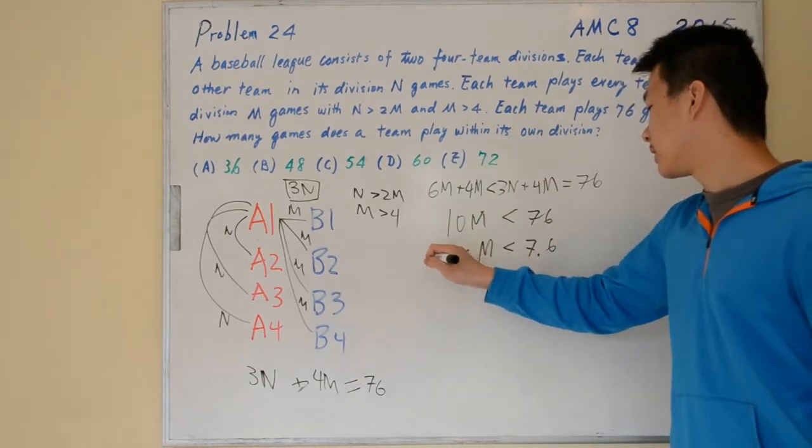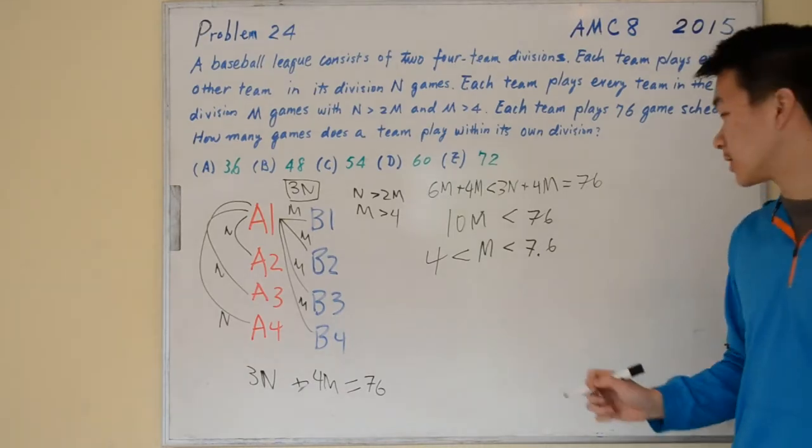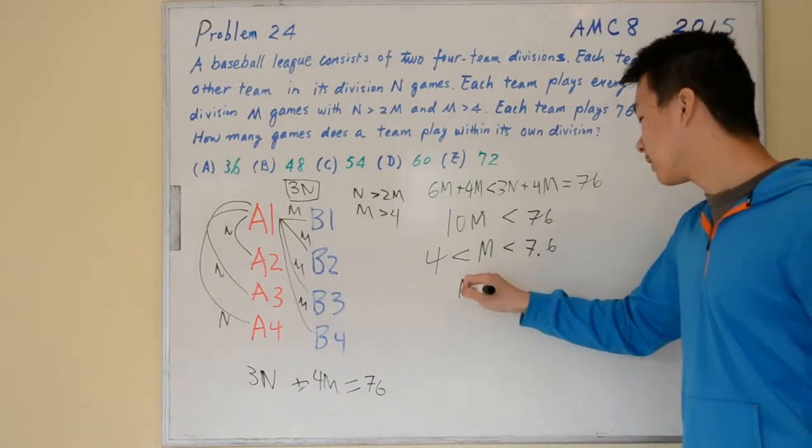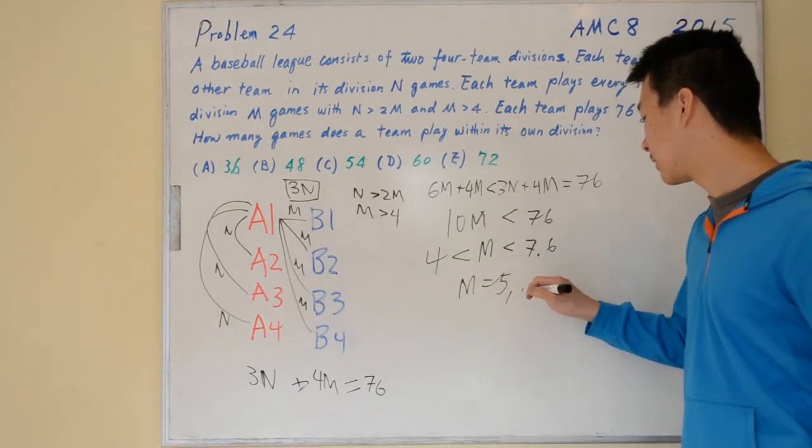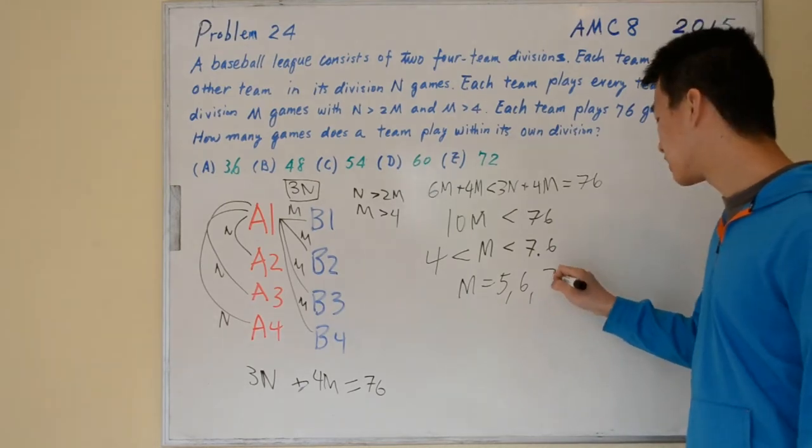This leaves us with 3 different possibilities for M. So M can equal 5, M can equal 6, and M can equal 7.